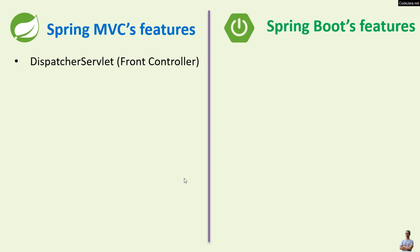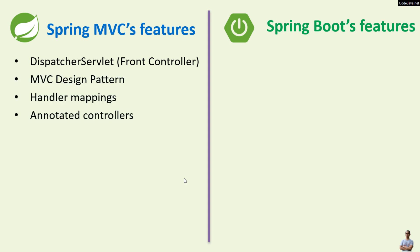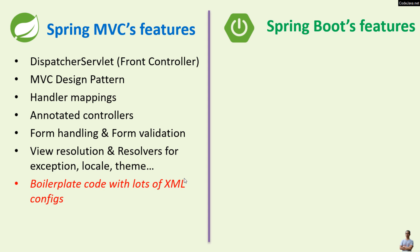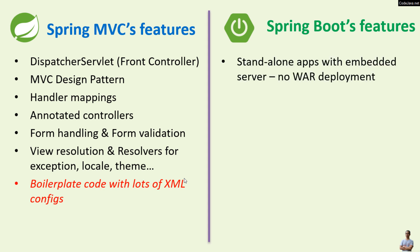The main features of Spring MVC are: dispatcher servlet, which acts as the front controller; MVC design pattern; handler mappings and controllers; form handling and form validation; view resolution; and resolvers for exception, locale, and theme. Spring MVC is very well known for boilerplate code with lots of XML configs.